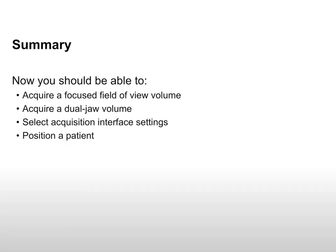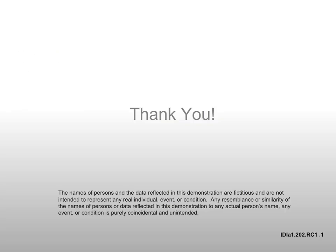This concludes the class on the CS9300 system: acquiring a 3D volume x-ray. Now you should be able to acquire a focused field of view volume, acquire a dual jaw volume, select acquisition interface settings, and position a patient. If you have any comments or questions about this class, please contact us and reference the code located in the lower right corner of this slide.